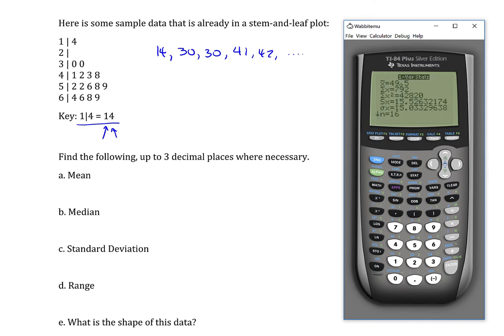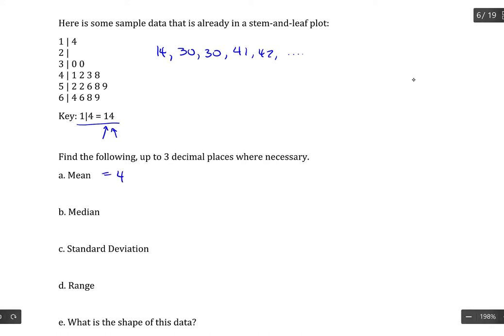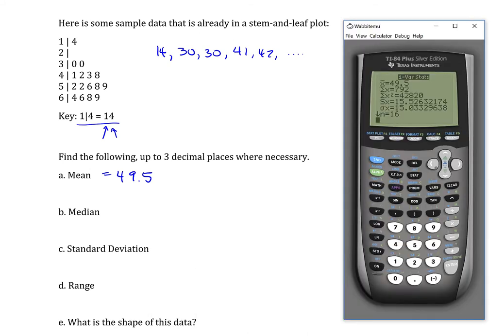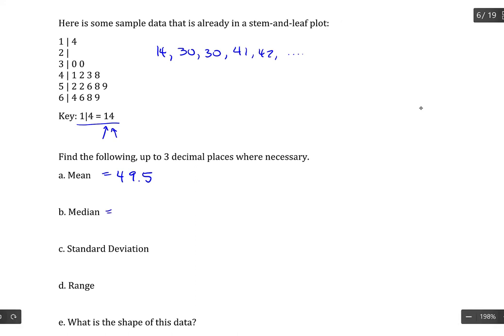Now we get the mean, which is X bar. So that's 49.5. The median is provided, but we have to scroll down to see it. And in this case, the median is given as 52.